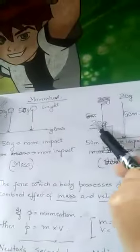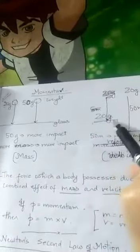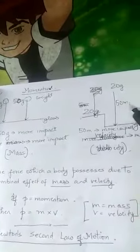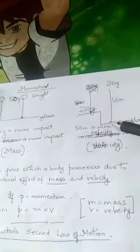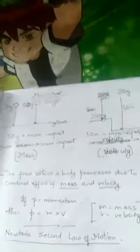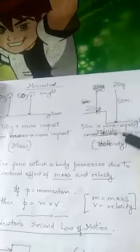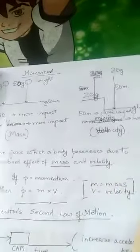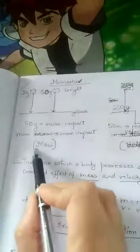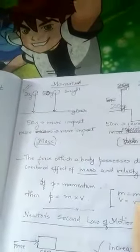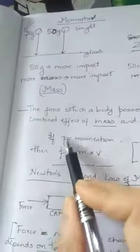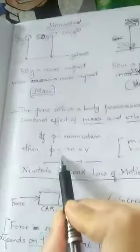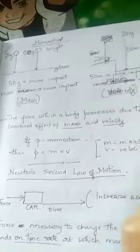Again, if we have two weights of 20 gram and 20 gram, one is placed on the glass surface and the other is placed at a height of 50 meters, and we allow them to drop. The one at a height of 50 meters will have more impact, because it is traveling with a certain velocity. So momentum ultimately depends upon the mass and the velocity. The force possessed by the body due to the combined effect of mass and velocity is called momentum. If I denote P as the momentum, then P is equal to M into V, where M is the mass and V is the velocity.